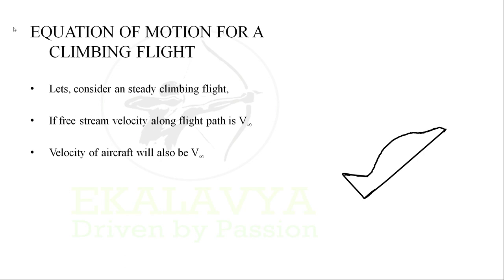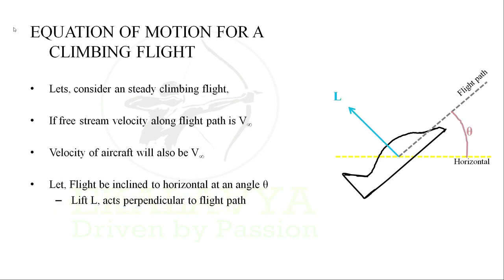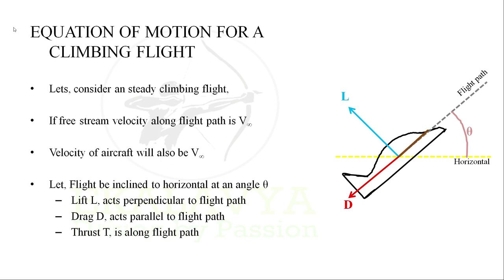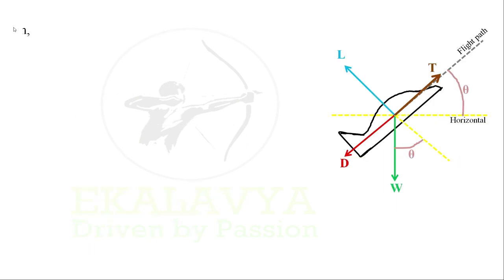Let's consider a steady climbing flight as shown in the figure. Freestream velocity along the flight path is V∞; velocity of the aircraft will also be V∞. Let the flight be inclined to the horizontal at an angle θ. Lift L acts perpendicular to the flight path directed upwards; drag D acts parallel to the flight path opposite to the flight motion; thrust T is along the flight path; and weight W acts vertically downward, always acting toward the center of the Earth.